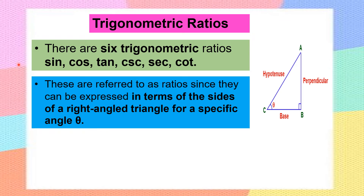Trigonometry is defined as the branch of mathematics that deals with the calculations related to the sides and angles of triangles, especially right angle triangles. A ratio is a comparison of two quantities — for example, boys to girls or cats to dogs. In trigonometry, the comparison is between the sides of a right angle triangle with respect to a specific angle called theta.